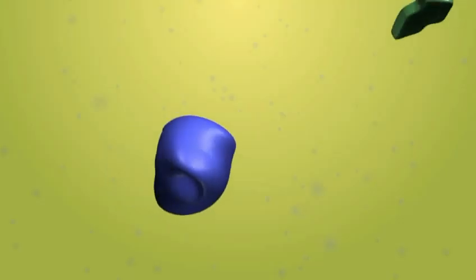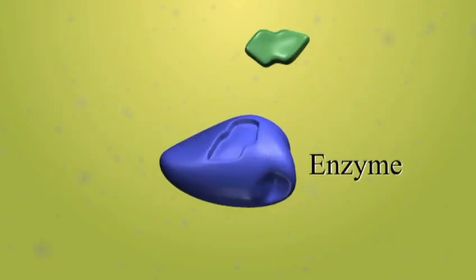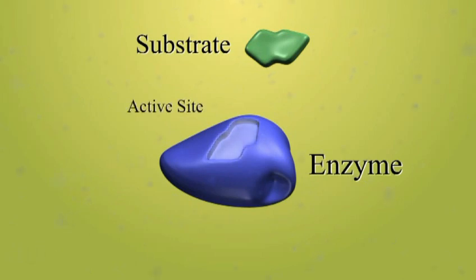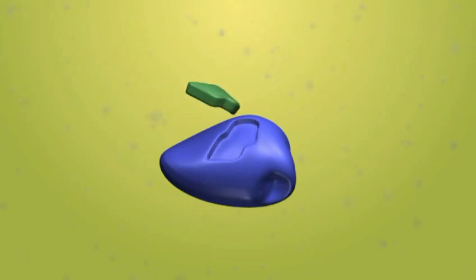During the normal enzyme catalytic cycle, the substrate encounters an enzyme with a specific active site to which it binds, forming an enzyme-substrate complex.